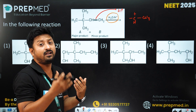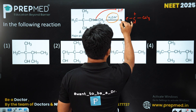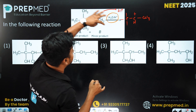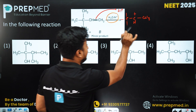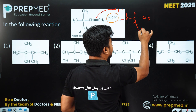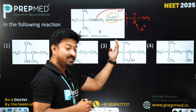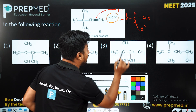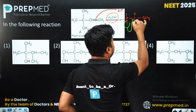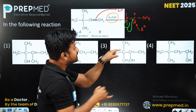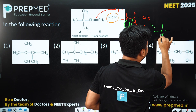Now something very interesting happens here — a rearrangement. The carbocation formed is a secondary carbocation, but adjacent to it is a tertiary carbon. So there will be a tendency of this methyl group to shift into that carbocation, and this actually leads to the formation of another product.